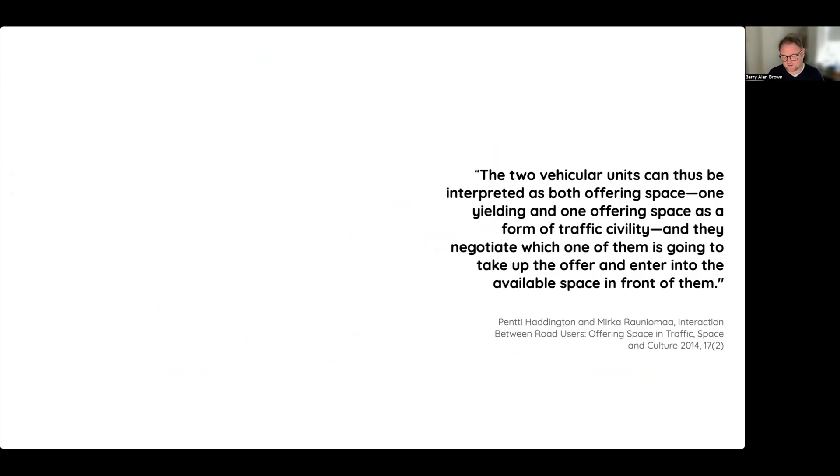The problem as we identify it is their inability to understand a basic unit of road interaction, which is yielding. In traffic it's very frequent that one road user will indicate to another through slowing down or stopping or moving in a certain way that they are yielding for the other road user, and this is a kind of real basic building block of traffic civility that these systems often struggle with.